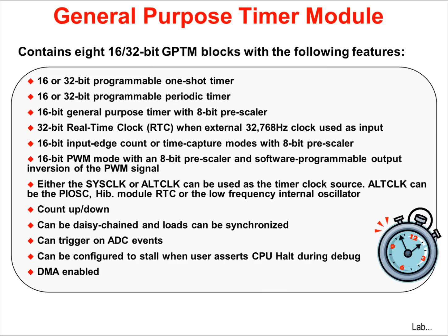The general purpose timer module, or GPTM, has 8, 16, or 32-bit timer blocks. They can be used for capture, compare, or PWM. There are 5 different timer modes available: one shot, periodic, input edge count or time capture, PWM generation, and real time clock. The timers can count up or down. PWM generation is simple with no deadband generation and software inversion of the outputs. The module supports synchronization across multiple timers, daisy chaining, and user-enabled stalling during debugging — this last feature stalls the timers during debug when the user clicks halt, preventing unwanted timer interrupts. The timers can also trigger the ADC sample sequencer or DMA transfers.